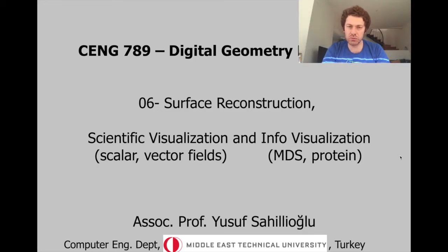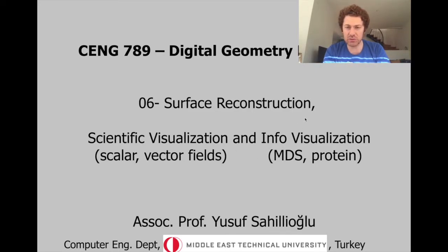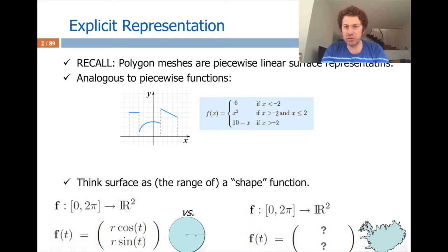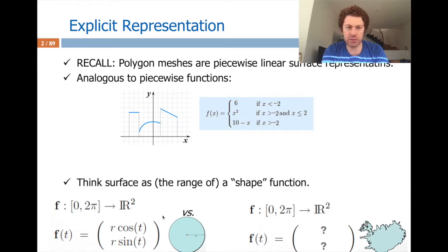Today I'll talk about surface reconstruction and its applications in scientific visualization, along with some independent scientific and information visualization applications. For surface reconstruction, we can do it explicitly or implicitly. Explicit representation is a piecewise representation of the surface embedded in 3D, or of a curve embedded in 2D. If the shape is mathematically defined, we can avoid piecewise representation and draw it continuously, but in general we deal with arbitrary shapes represented explicitly using polygon pieces in 3D.